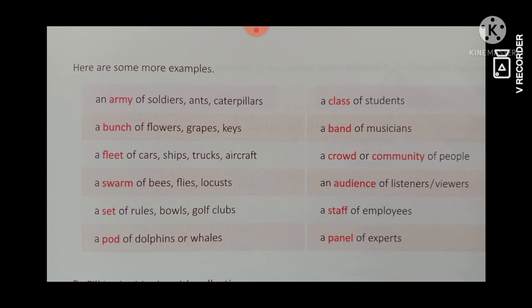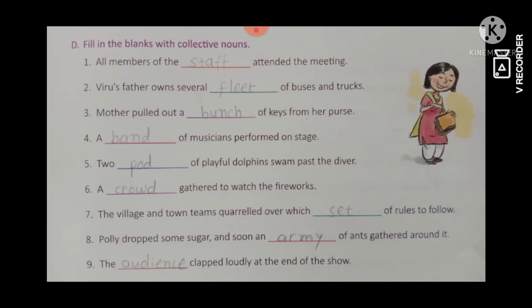Now we are going to solve the exercises which are given in your book. Listen carefully and write down in your textbook. Fill in the blanks with collective nouns. First one: all members of the staff attended the meeting. We saw on the top the group word 'staff,' so all members of the staff attended the meeting.